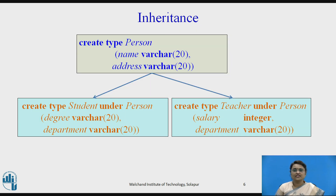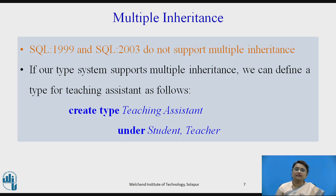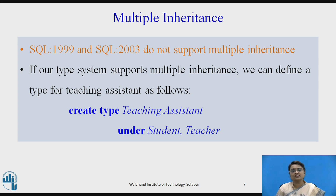In this example, student and teacher are the sub types and person is the super type. Diagrammatically, person is the super type and both student and teacher inherit from it. This earlier example is called single inheritance — because there is only one super type with multiple sub types. In multiple inheritance, there are multiple super types and one sub type. Multiple inheritance is not supported by SQL 99 and SQL 2003.